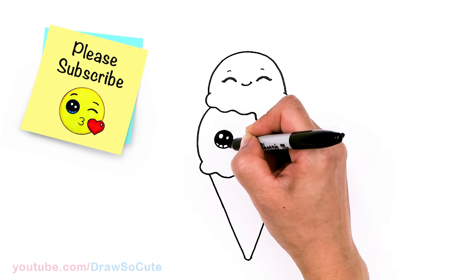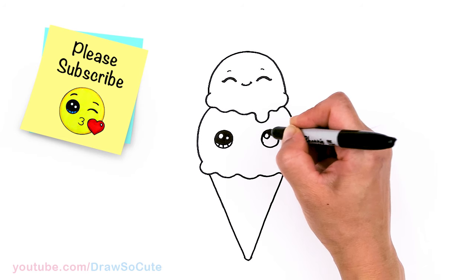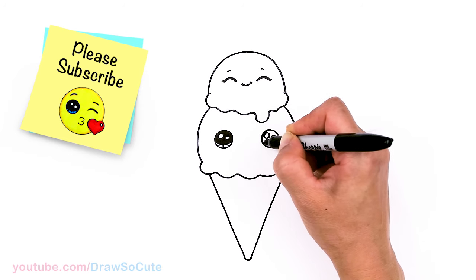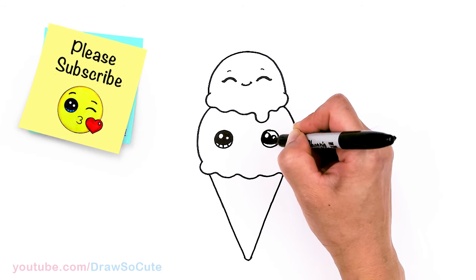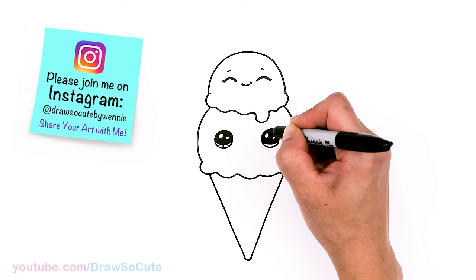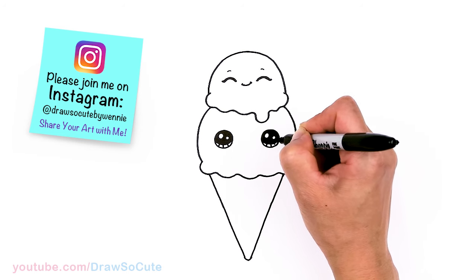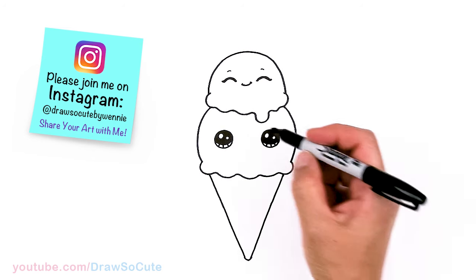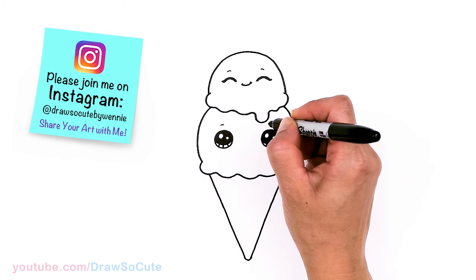And lines at the bottom. And same thing over here. There. Now we have our eyes in. Let's come above each eye. I'm just going to draw another small curve above each eye.